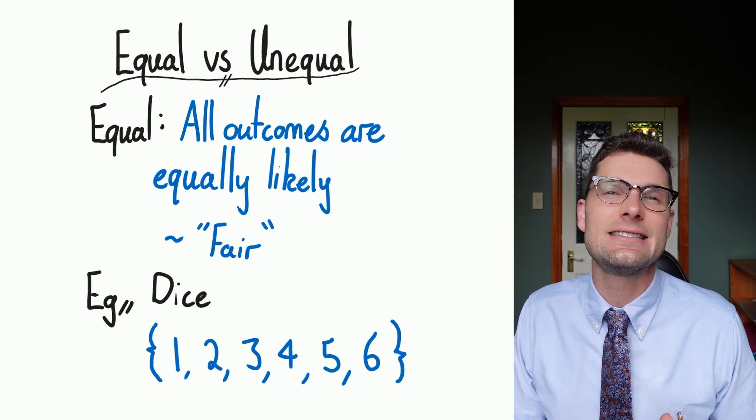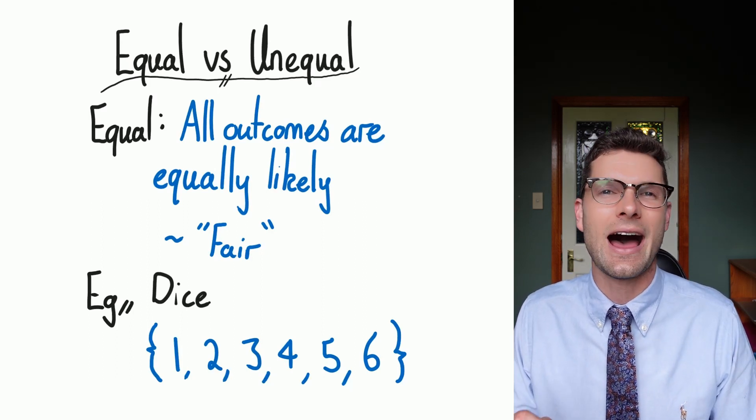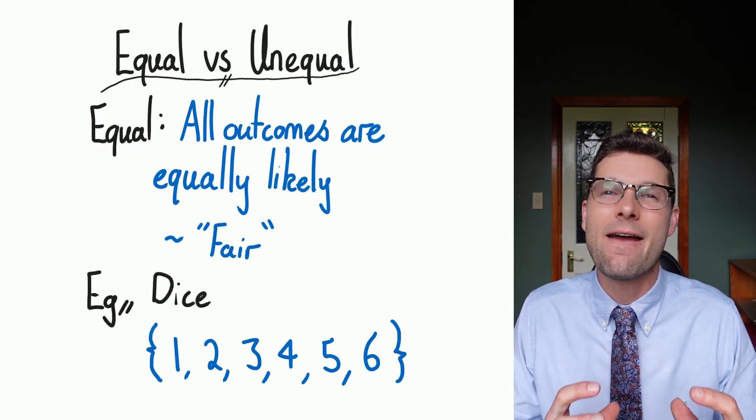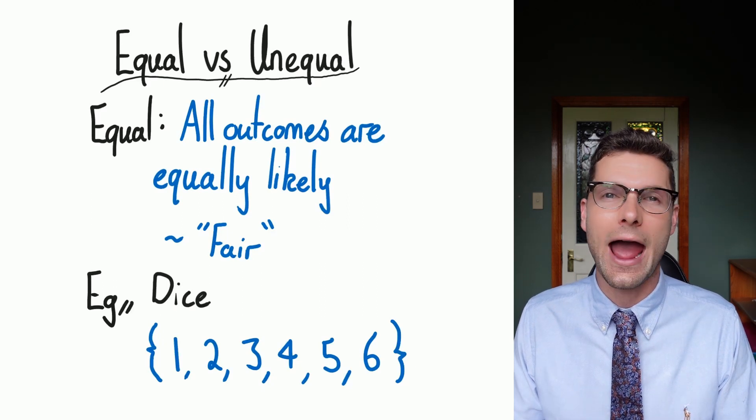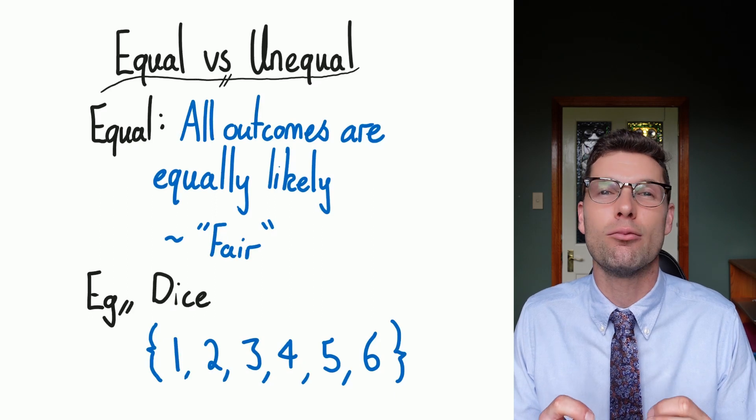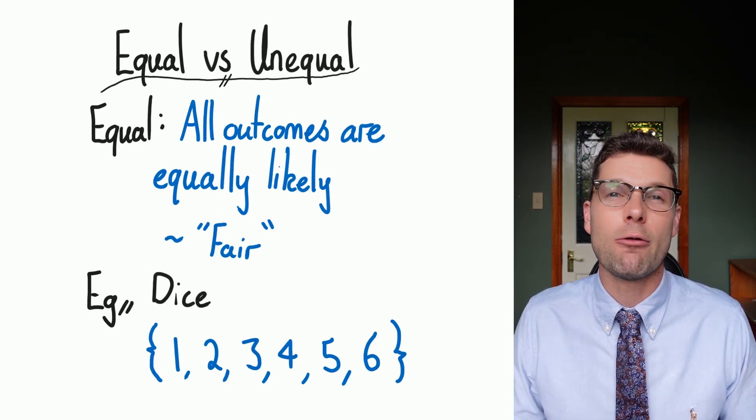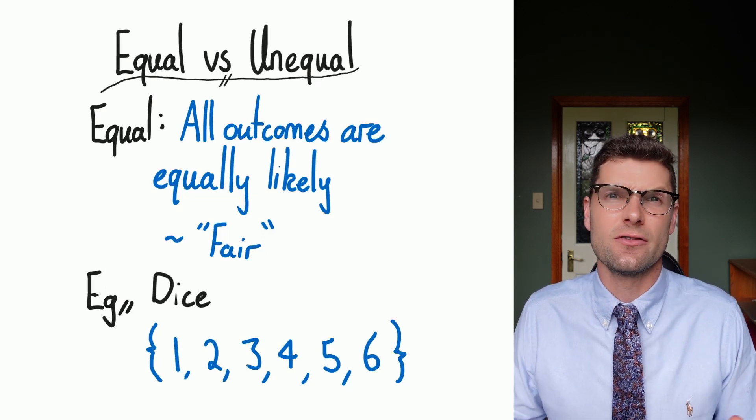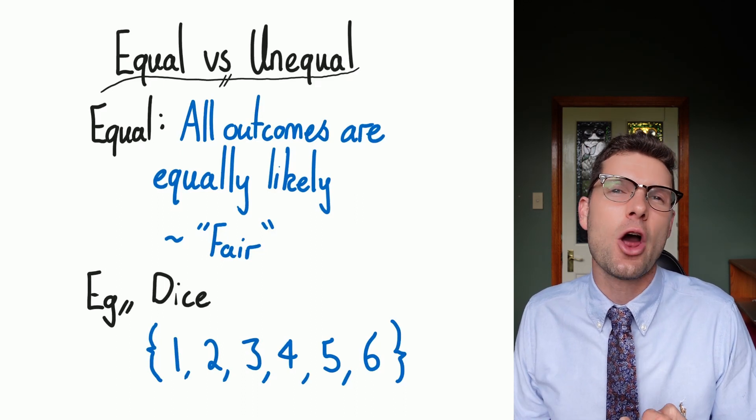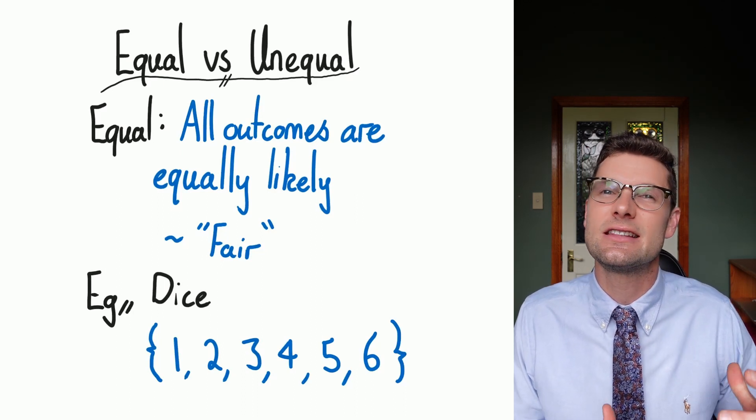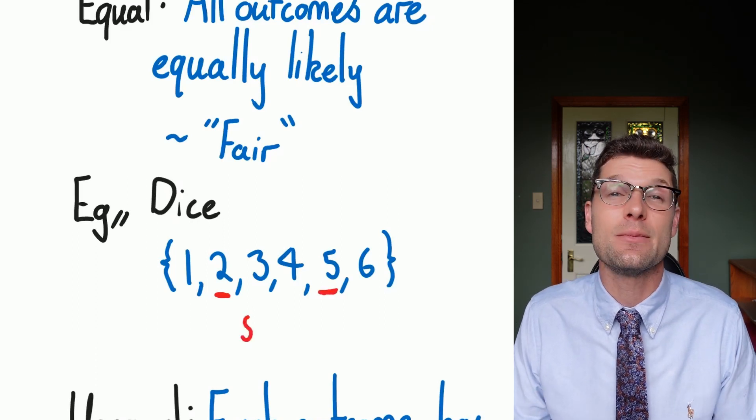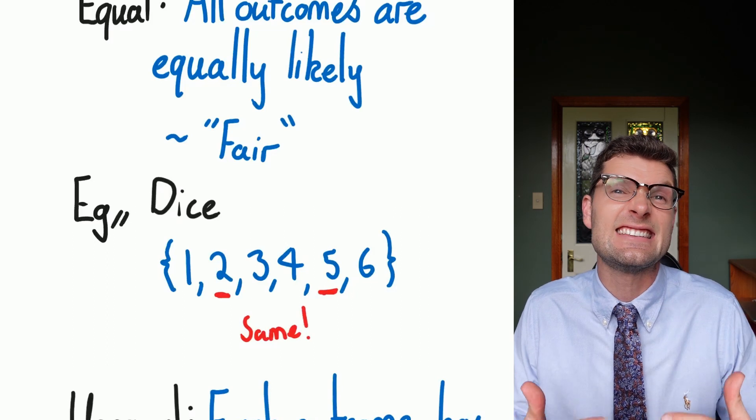So the first language that we've got to talk about is the concept of equal versus unequal and these do really make intuitive sense. Equal probabilities are where every single outcome that could happen is exactly the same chance of occurring. So they've got the same probability. So the easiest example of this is if you think about rolling one die. The options of rolling a die are one, two, three, four, five and six. And we know that they're equal chances because the chance of getting a two and the chance of getting a five are exactly the same.